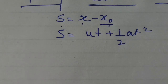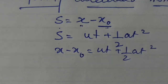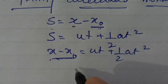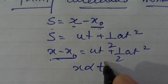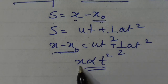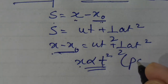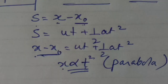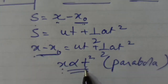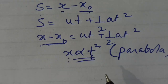When a variable is directly proportional to the square of time, the equation represents a parabola. Just as the equation of a straight line is y = mx + c, the equation of a parabola has the variable proportional to the square of the other variable. This means the PT curve for uniformly accelerated motion will be a parabola.